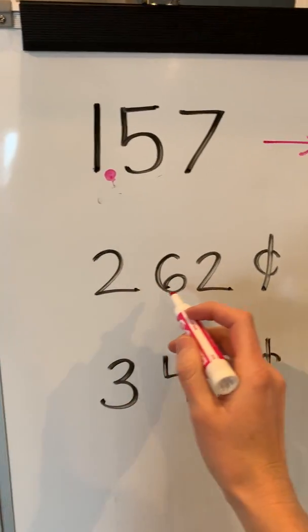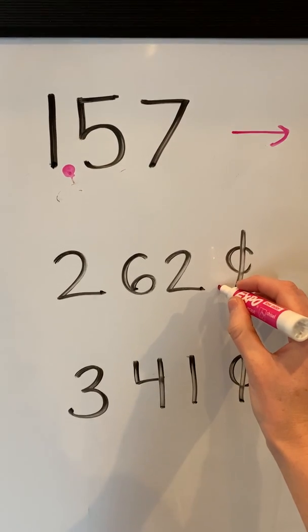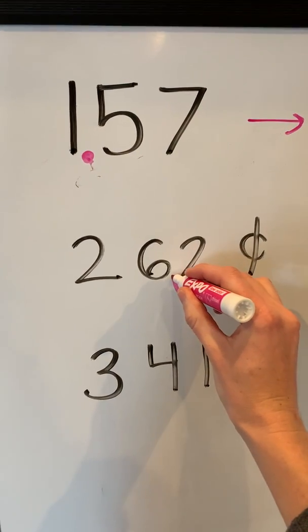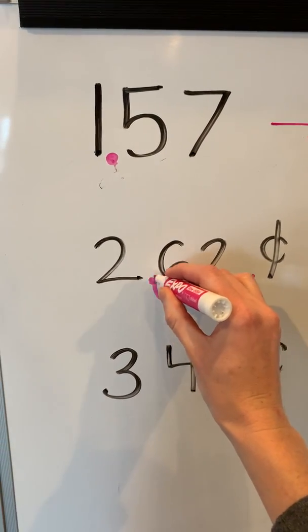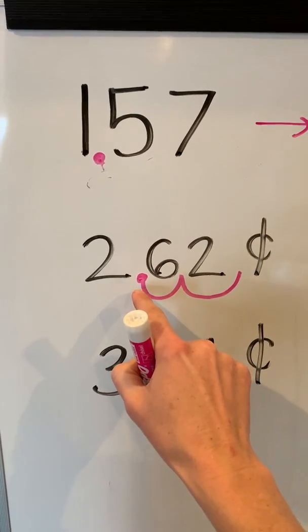Let's try it again. 262 cents, we find the end of the number, jump over one, two spaces, that's our new decimal point.